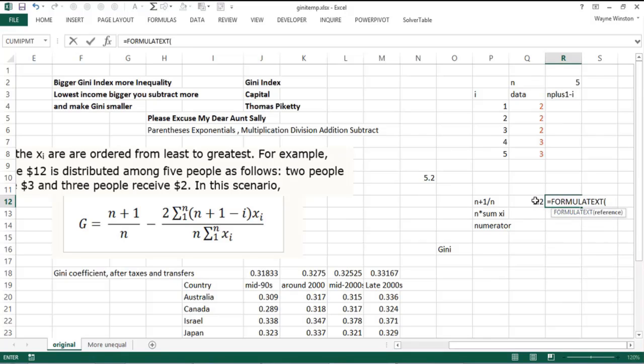I'm using a formula text function in Excel to show my formula, so I think that's helpful. Now I want n times the summation of the x sub i's. That's simple because that's going to be the denominator—that's five people times the sum of the x sub i's. That's 60.